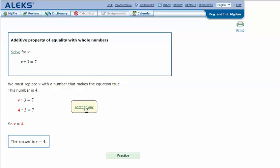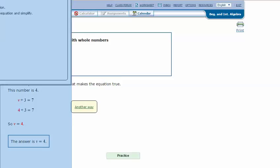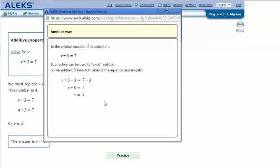So we can take a look at another way. And if we're not sure how to solve this or what the answer would be, if we don't know that the answer is 4, we could do it this way. Since this is V plus 3, the opposite of adding would be subtracting, because we want to get V by itself on the left and get an answer on the right.